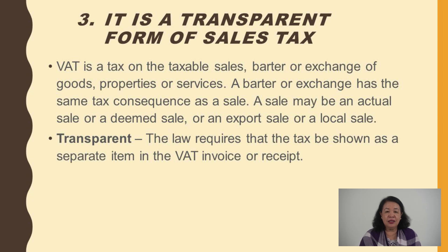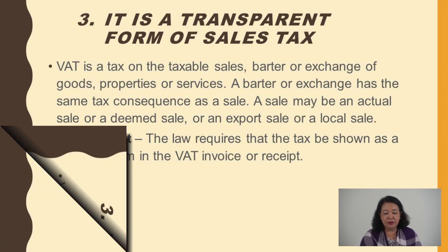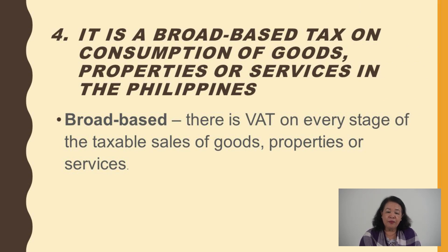Taxpayers who are registered must have a permit to print receipts, and the format of receipts is regulated. The receipt shows: total amount, total selling price, less amount for VAT, total sales, and then total amount payable at the bottom. So it is clearly itemized — how much goes to the seller and how much is value-added tax.